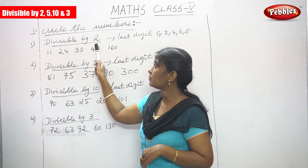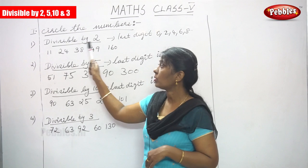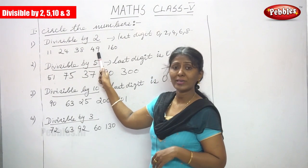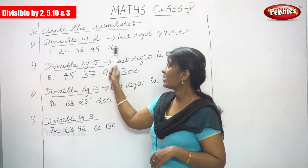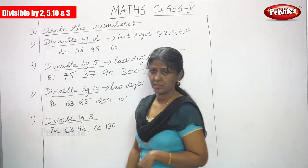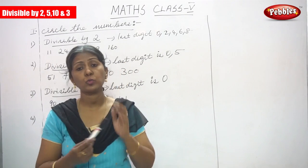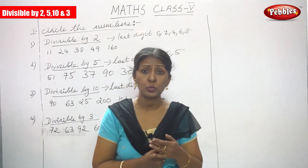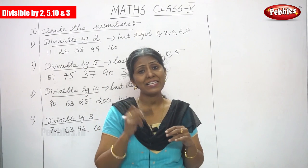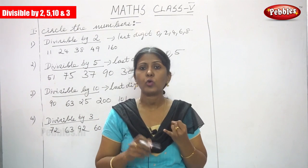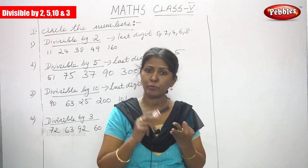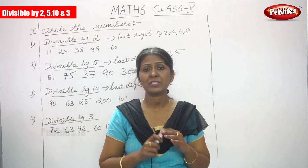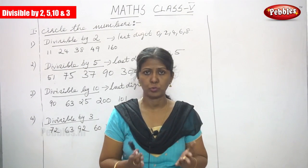The question is divisible by 2: 11, 24, 38, 49, 160. What is the rule of divisible by 2? If the last digit ends with 0, 2, 4, 6, or 8, the number is divisible by 2.